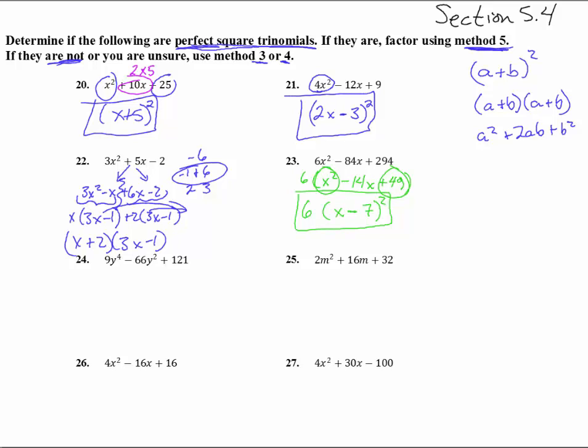The next one. 9y to the 4th, 66y squared plus 121. Now this just has 11s. That's 9s. But that's a perfect square and that's a perfect square. So we get a 3y squared times itself would give us that one. And this one is 11. And this guy here is minus. So let's just double check. Is that times that doubled? 66. And indeed it is. So we got that one.